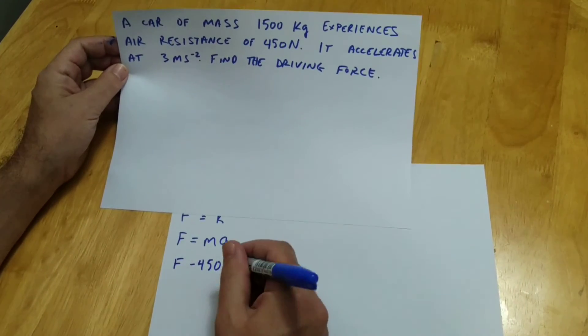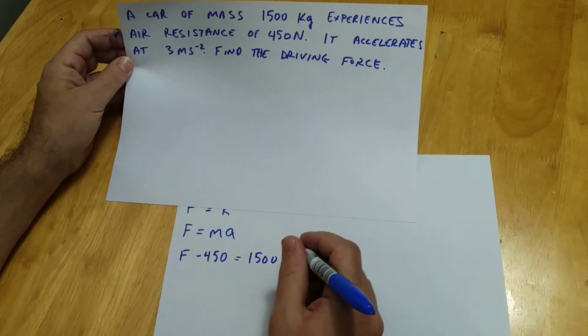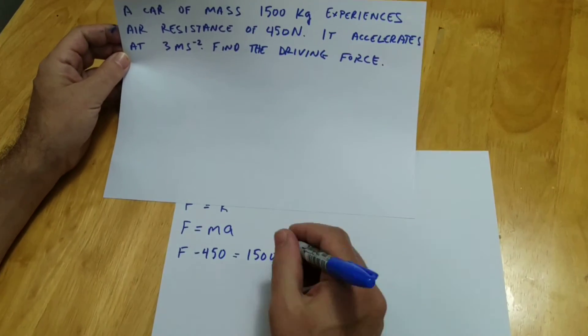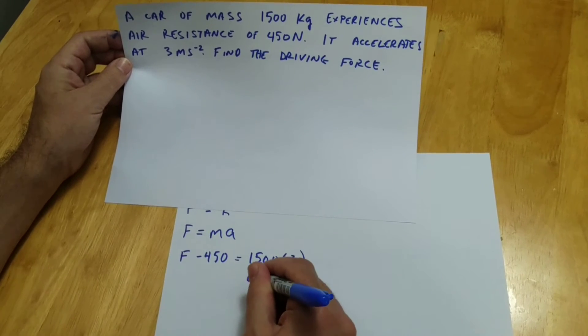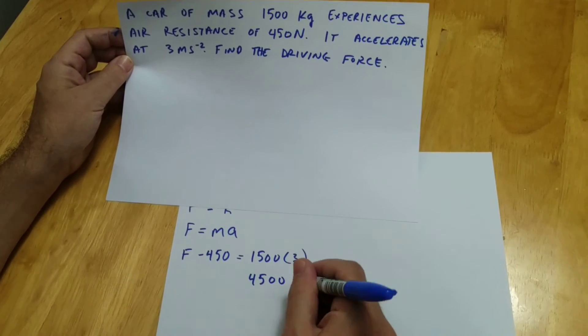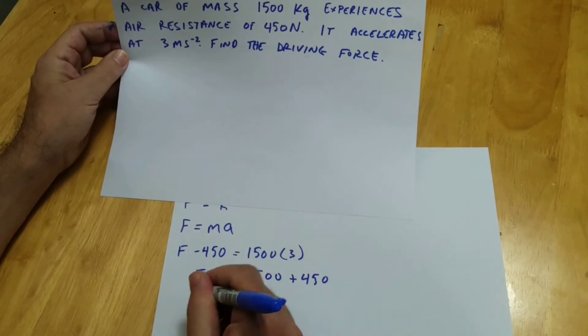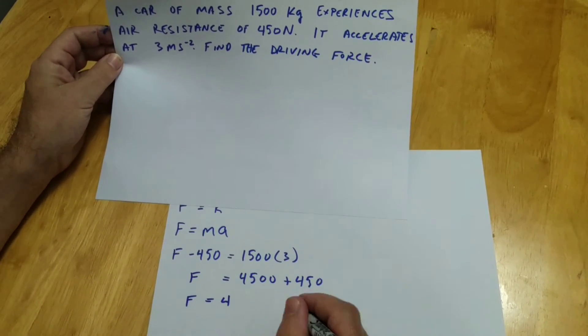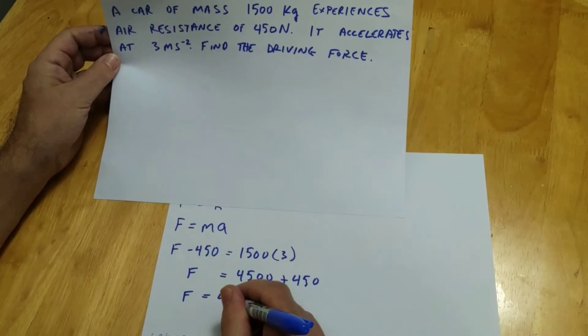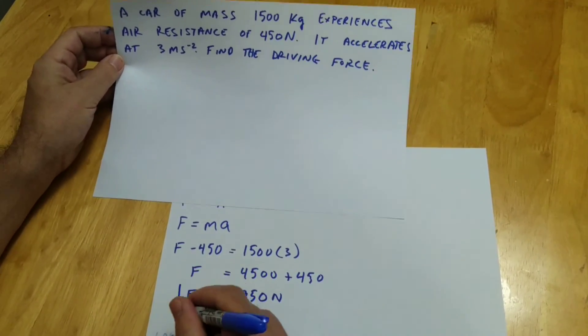that's our R, and then we have 1,500 times the acceleration. And that's 4,500 plus 450 is going to be equal to F. So F is going to be 4,950 newtons, and there's the solution.